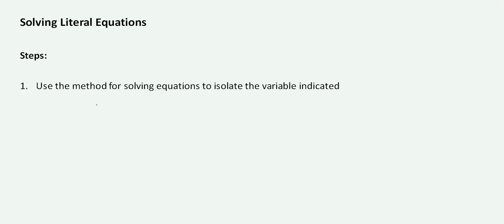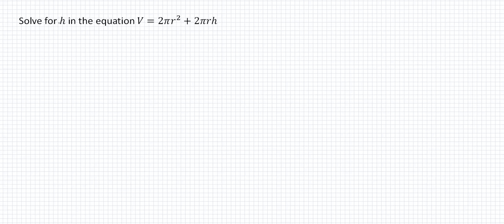To solve literal equations, we're looking at the method we follow to isolate the indicated variable. Let's look at some examples together. Solve for H in the equation V equals 2 pi R squared plus 2 pi R H, and we're trying to isolate H.